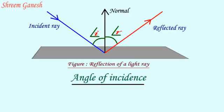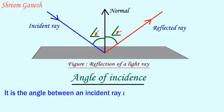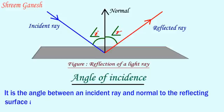Angle of incidence: It is the angle between an incident ray and normal to the reflecting surface at point of incidence.